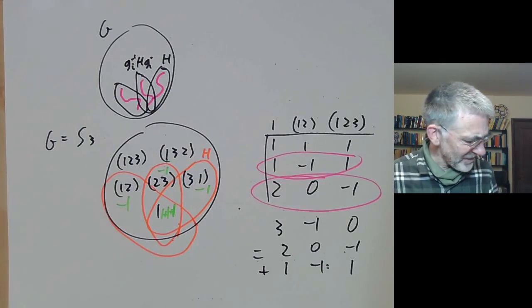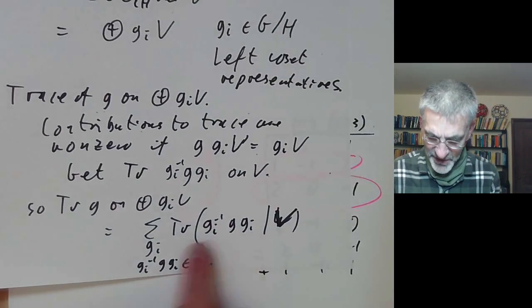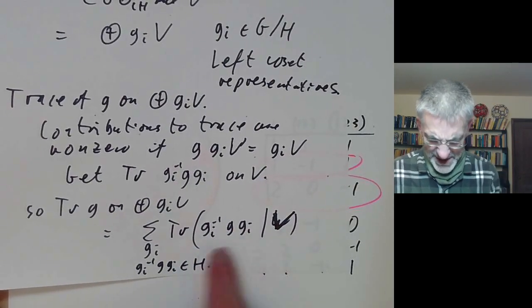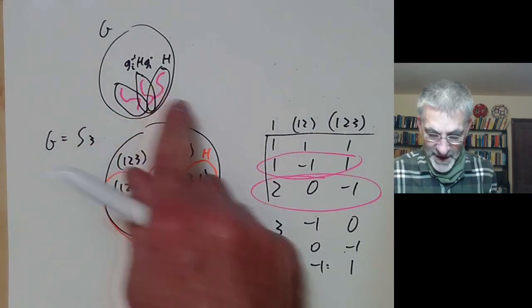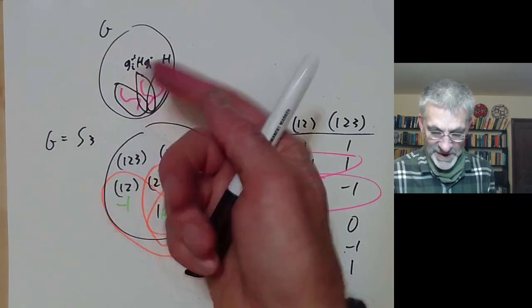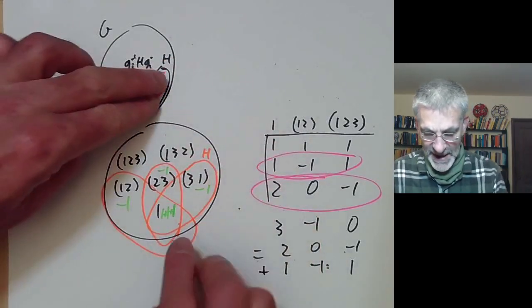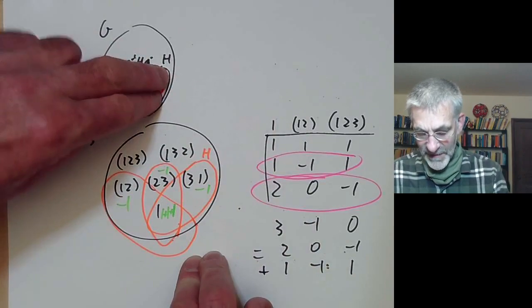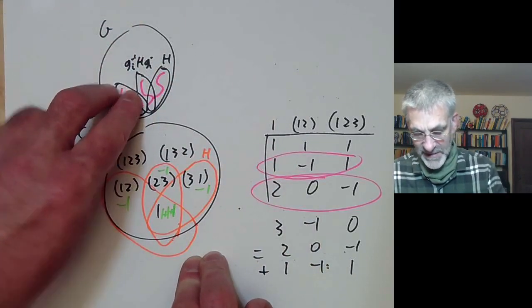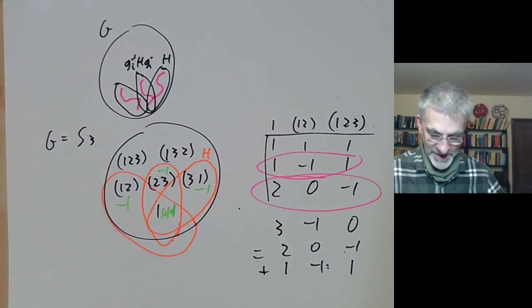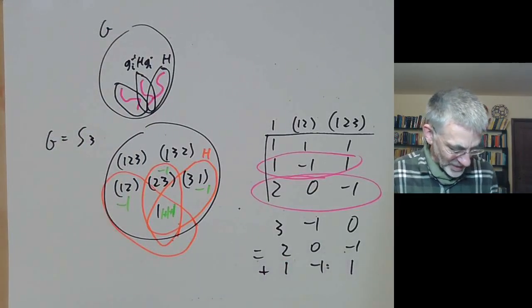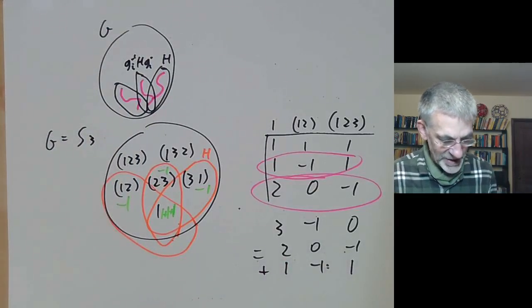Generally, if you try doing calculations with representations algebraically using the character formula, it's rather confusing and hard to see what's going on. What you should do is think of the character of the induced representation geometrically — just take the character of H, conjugate it to all conjugates of H, and add those up. If you do that, it's usually much easier to work out what the induced representation is.